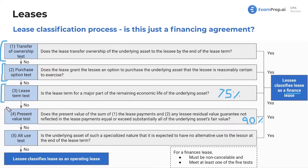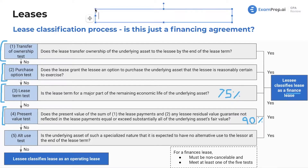The present value test: let's say over the course of the lease you're going to pay a total of $10,000 — $1,000 a year for 10 years. If by the end of the lease you will have paid 90% of the asset's value — say $9,000 out of $10,000 — that means you've essentially paid for the majority of the asset, so it's considered a financing lease. They call it the present value test because you present-value factor the payments.